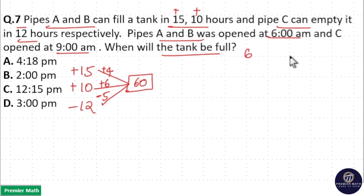Now A and B opened at 6 am and C opened at 9 am. The difference is 3 hours, meaning A and B worked for 3 hours alone. In 1 hour, A and B can fill 6 plus 4, which is 10 liters. So in 3 hours, 3 times 10 equals 30 liters. The remaining work is 30 liters.